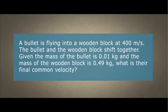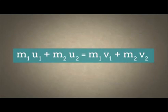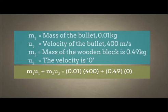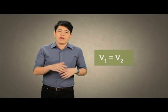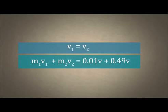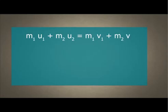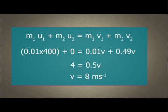Let's use the formula to solve an exam question. A bullet is flying into a wooden block at 400 meters per second. The bullet and the wooden block stick together. Given the mass of the bullet is 0.01 kg and the mass of the wooden block is 0.49 kg, what is their final common velocity? Using the formula MU plus MU equals MV plus MV: M1 is 0.01 kg, U1 is 400 meters per second, M2 is 0.49 kg, and U2 is 0. Since the bullet and wooden block move together, they share the same final velocity. Substituting the values, the answer is 8 meters per second.